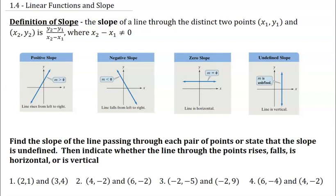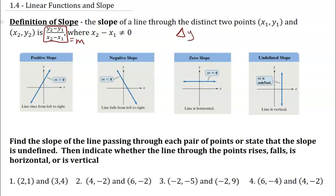The definition of slope is given mathematically right here. The letter we usually use to represent slope is m, so m equals y2 minus y1 over x2 minus x1. But really what you need to be thinking of is it's the change in y over change in x. The symbol for change is a delta, which looks like a triangle — a capital Greek letter delta. So change in y over change in x is what we think of when we think of slope.